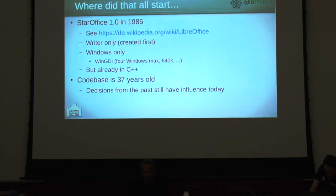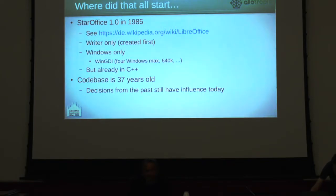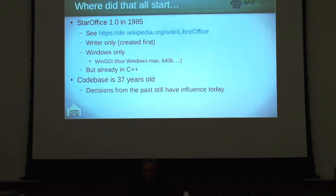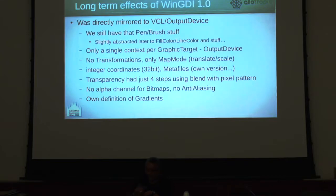It was Windows only, so it had to use WinGDI because there was nothing else. WinGDI 1.0 only allowed something like four windows, and you had to run on 640k — all that stuff you cannot imagine today anymore, which is good of course. Luckily, they decided to use C++, so we profit from that today — even though C++ was far from normal at that time and not very stable.